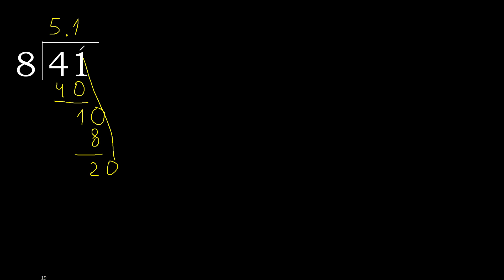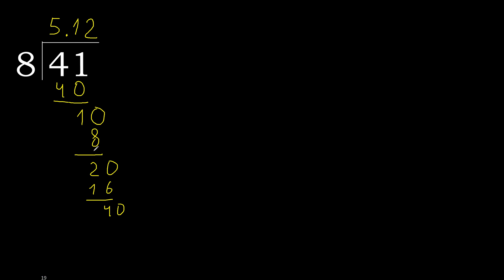Complete. 0 point. 20. 8 multiplied by 3 is greater. Multiplied by 2 — 16, subtract. Complete. 40. 8 multiplied by 5 is 40.